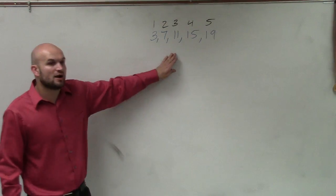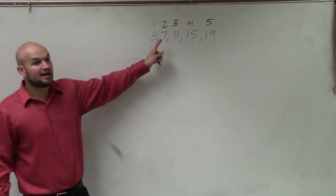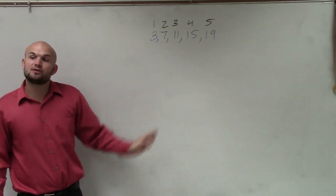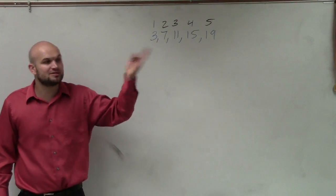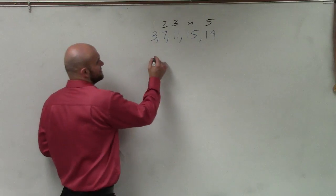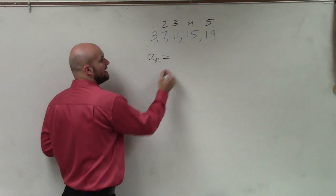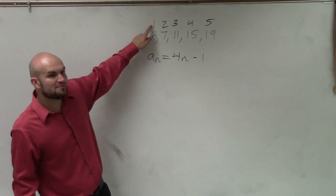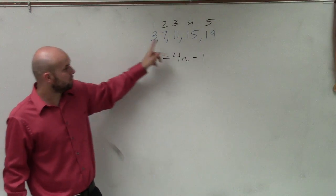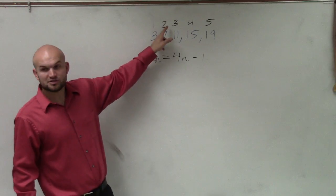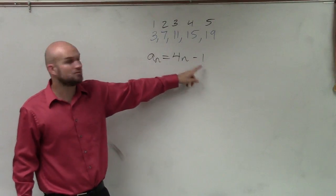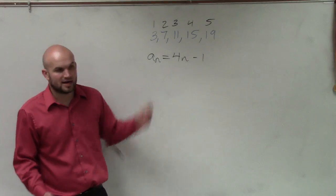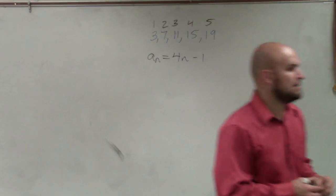I can multiply by 2 and add 1, but that's not going to give me the 7. So then we look into multiplying and maybe some subtracting. Exactly as somebody already set out, I can write the rule as 4n minus 1. Because 4 times 1 is 4, minus 1 is 3. 4 times 2 is 8, minus 1 is 7. And you can see it works for the rest of those values. So that is how you write the rule for that one.